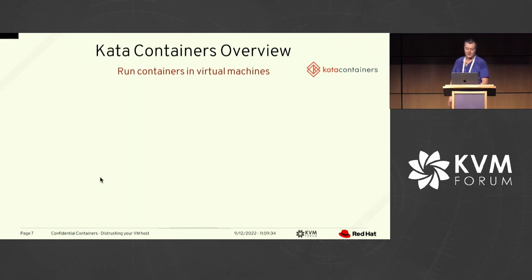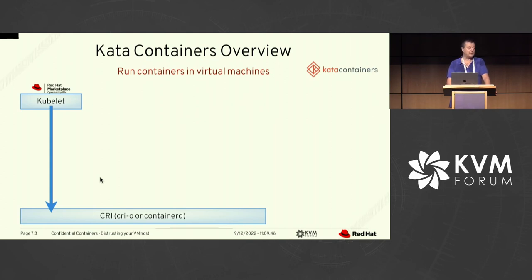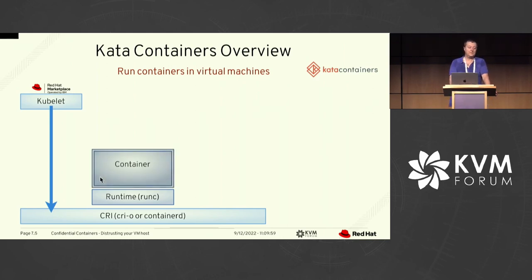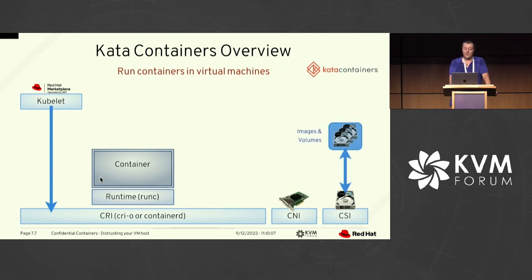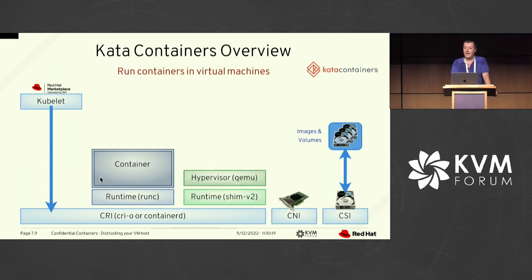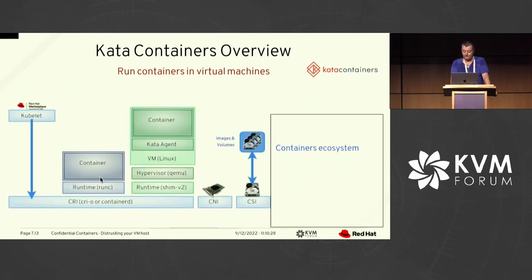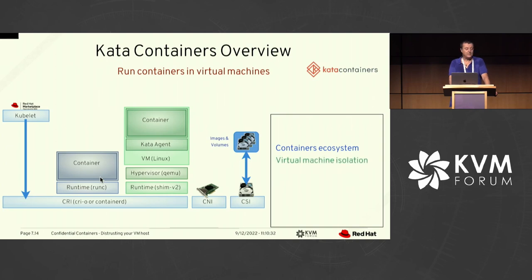A quick overview of Kata containers, which is the project we started with. Starting from something like the Red Hat Marketplace, we go through Kubelet, which sends commands down to the container runtime interface — implemented either by CRI-O or Containerd — which then invokes a runtime like RunC or CRUN. That's going to start your container. This also relies on a container network interface and container storage interface to deal with images and volumes. When you run a VM to run your containers, you go through a different runtime called Shim V2 for Kata containers version 2. That itself launches a hypervisor and the VM; inside there is a Kata agent, and there you run your container. The idea is to have the containers ecosystem but with virtual machine isolation.